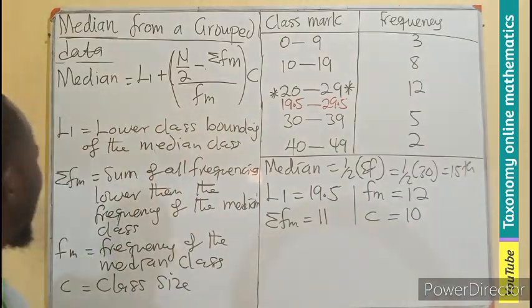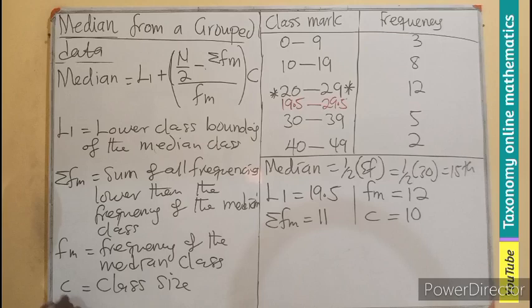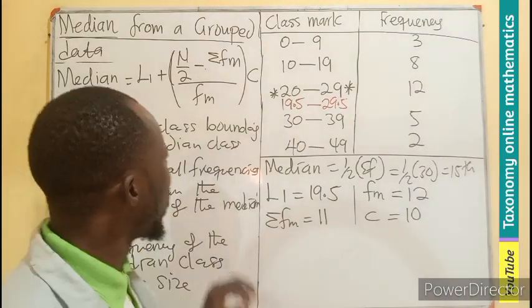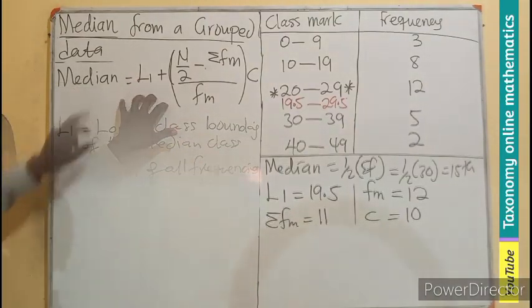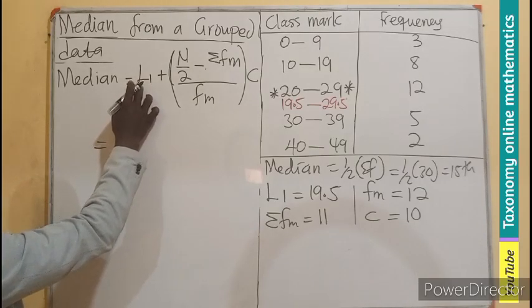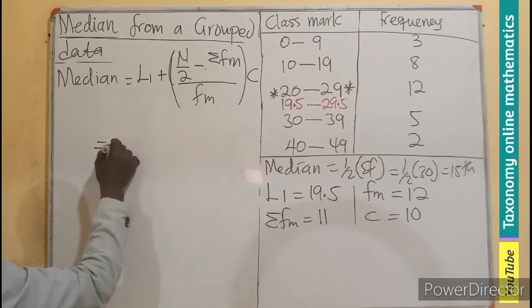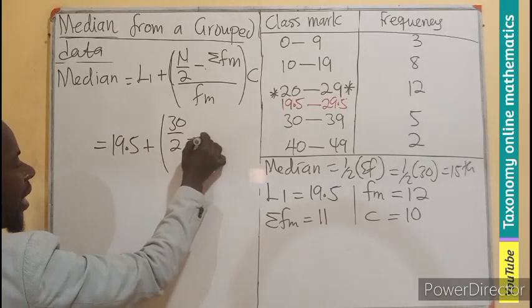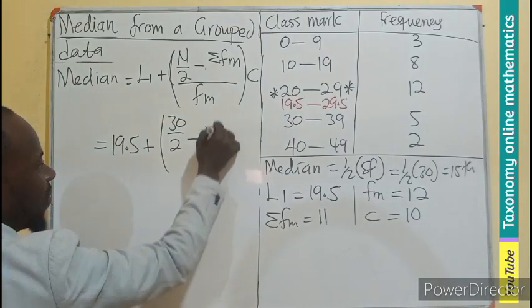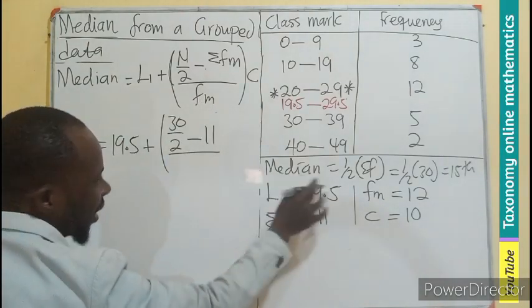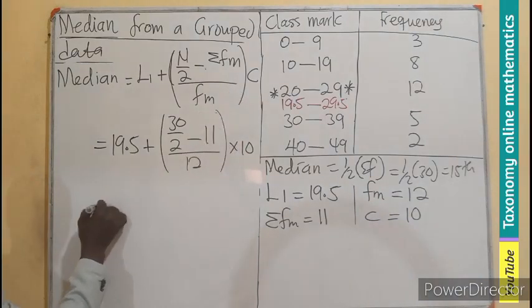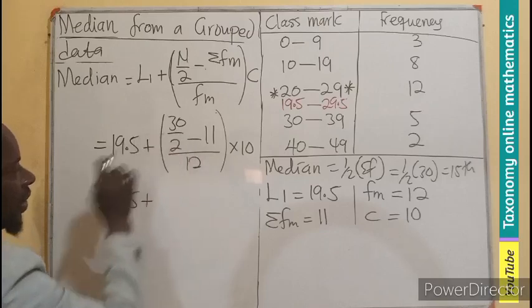So all that we are looking for, we find, except this. So that is going to be the N is the Σf. The Σf, which is the total frequency. The total frequency itself. So we have got all the values we need. All we need is to substitute the values into the formula. So from here, our median is just going to be lower class boundary, which is going to be 19.5 plus, into bracket, 30 over 2 minus, the sum of all this will be 11, divided by this, which is our 12, all this multiplied by 10, which is the class size.